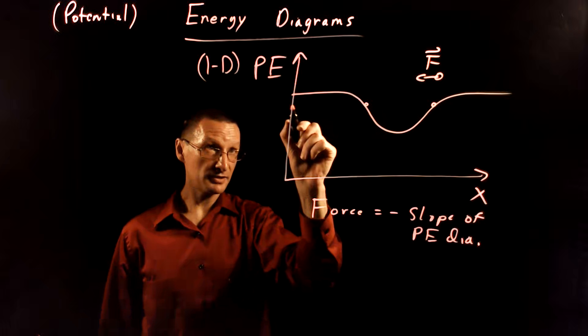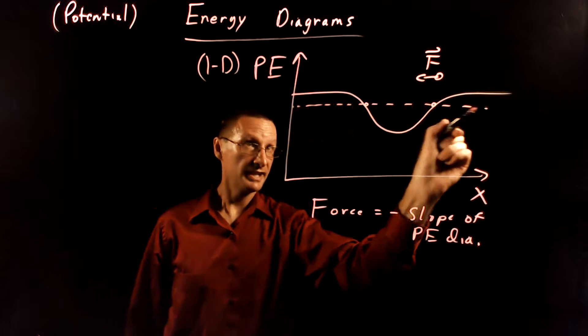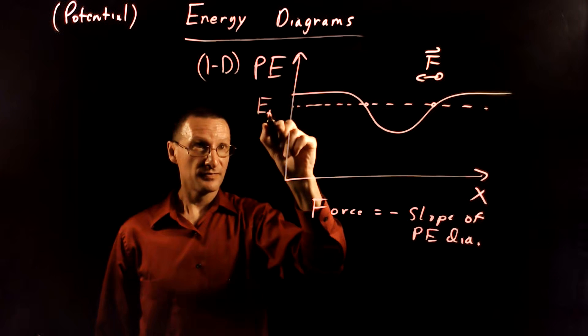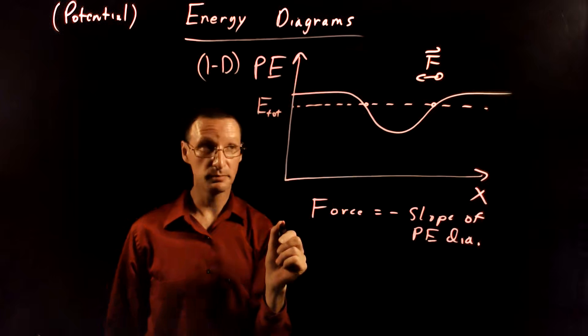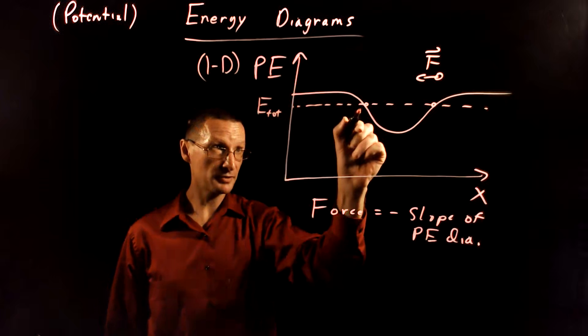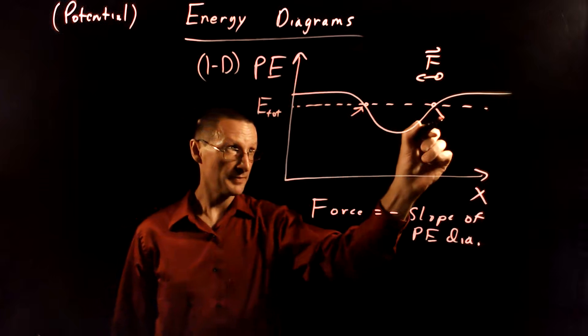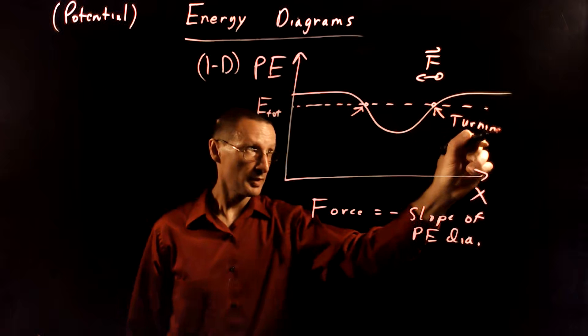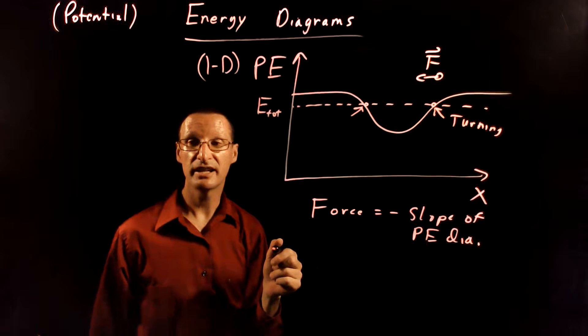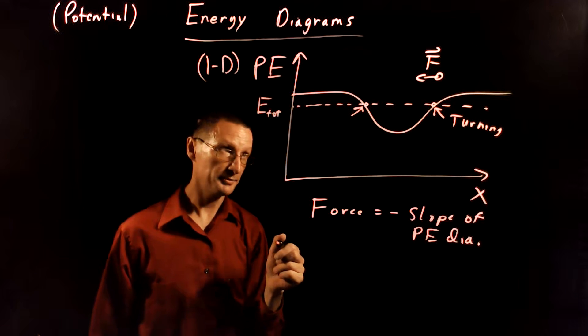And it's going to stop and turn around at that point because its total energy is equal to all potential energy at this point. And so it's going to stop and turn around, and these actually are called turning points because that's the point where the total energy is equal to the potential energy.